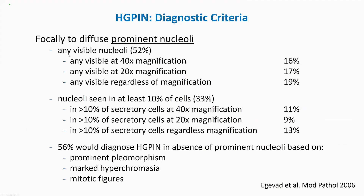Some nucleoli may be visible at 40x or 20x magnification. Other investigators require the presence of at least a nucleolus in 10% of cells, showing variability among different pathologists. In a 2006 study, 56% of participants would also diagnose high-grade PIN in the absence of prominent nucleoli if the nuclei showed prominent pleomorphism, marked hyperchromasia, and/or mitotic figures were present.